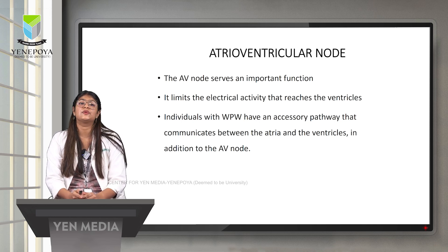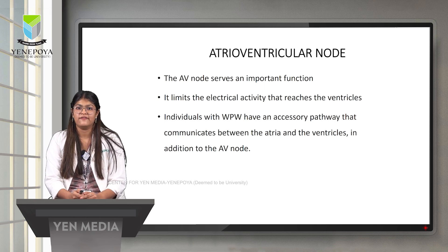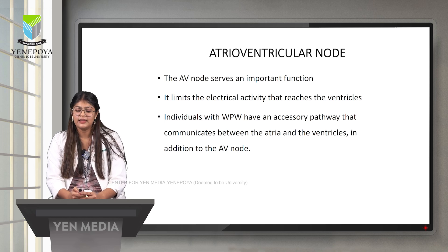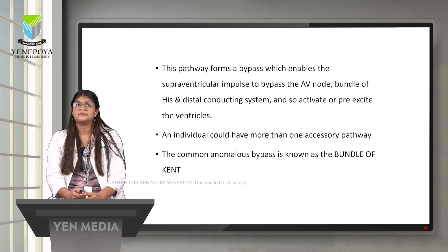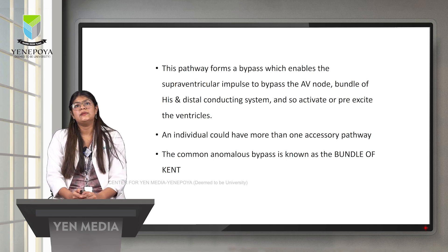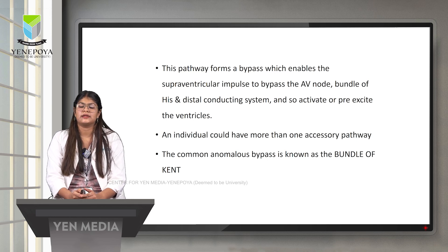Individuals with WPW have an accessory pathway that communicates between the atria and ventricles in addition to the AV node. This additional abnormal accessory pathway forms a bypass enabling the supraventricular impulse to bypass the AV node, the bundle of His, and the distal conducting system, thereby pre-exciting the ventricle.